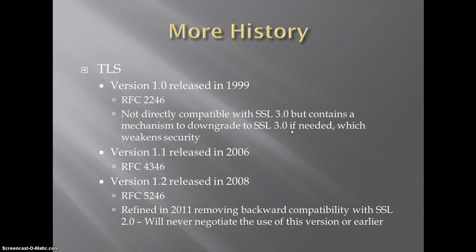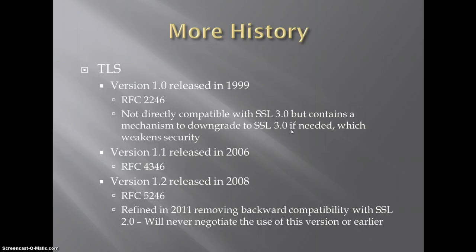Moving on to TLS, version 1 was released in 1999, which is not directly compatible with SSL but contained a mechanism to change your session over to SSL 3.0 if needed — though that of course weakens the security. Version 1.1 came along in 2006 and 1.2 in 2008. What's kind of amazing is that version 1.2 was refined in 2011, removing backward compatibility with SSL 2.0. So that flawed protocol invented back in 1995 was still being supported until last year, and it's not even really gone because versions 1, 1.1, and even SSL 3.0 presumably still support backward compatibility with it.